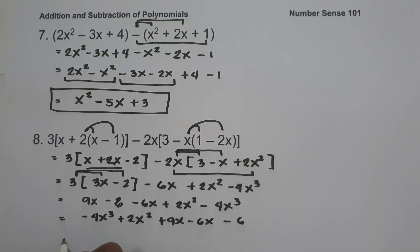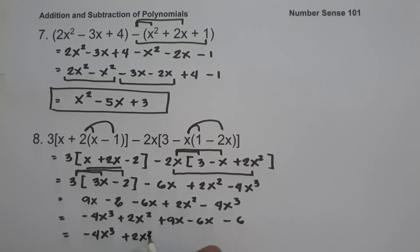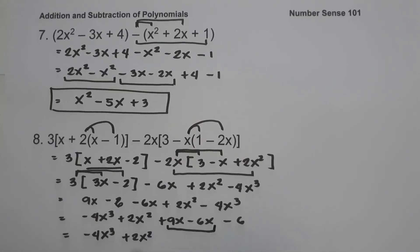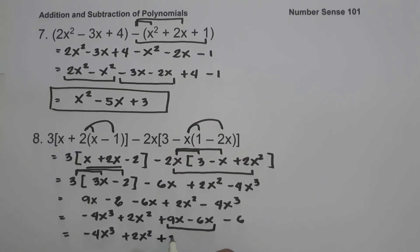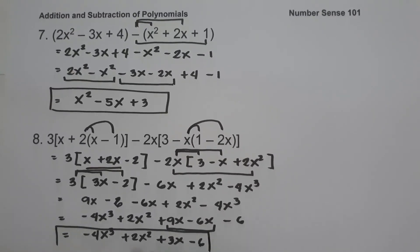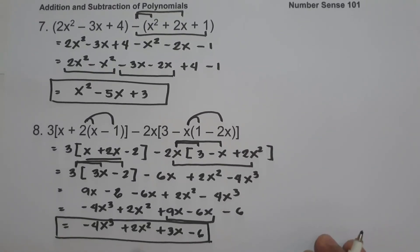So let us combine like terms: we have negative 4x cubed, plus 2x squared, and 9x minus 6x is 3x, and then minus 6. And this will be our answer. I hope you've learned from this video. Thank you so much for watching, and God bless us all.